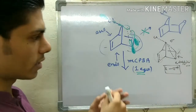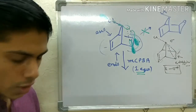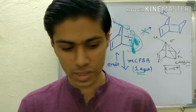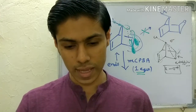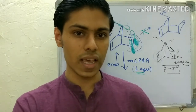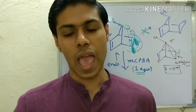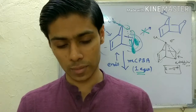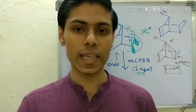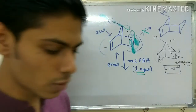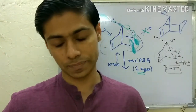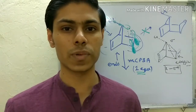Two very important things which affect the order of neighboring group participation: one is the electron factor - generally if you have a more electron-rich center and a less electron-rich center, neighboring group participation occurs between them. The second important thing is that the two centers have to be in correct, proper stereochemistry - only then can they do neighboring group participation. If you keep these two points in mind, the whole topic of neighboring group participation will be much easier.